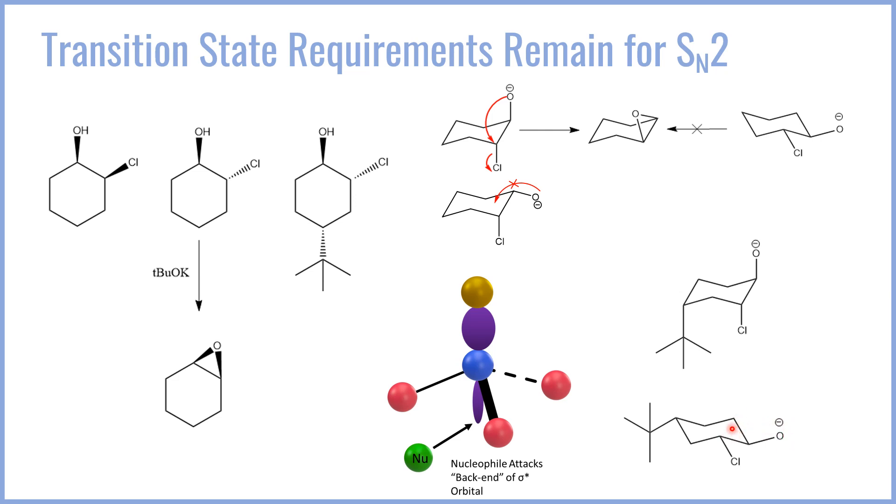The O- cannot attack the chlorine in this configuration. So, while the groups are in the proper stereochemical orientation to react, because of this tert-butyl group, conformationally, this chair predominates and inhibits the reaction from ever occurring. And so, this species does not react very well for SN2.